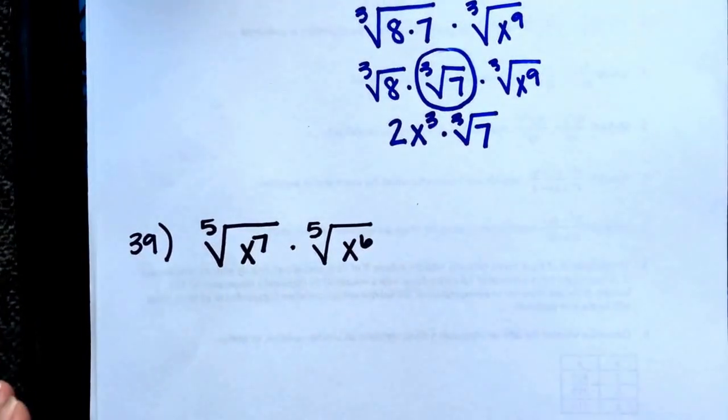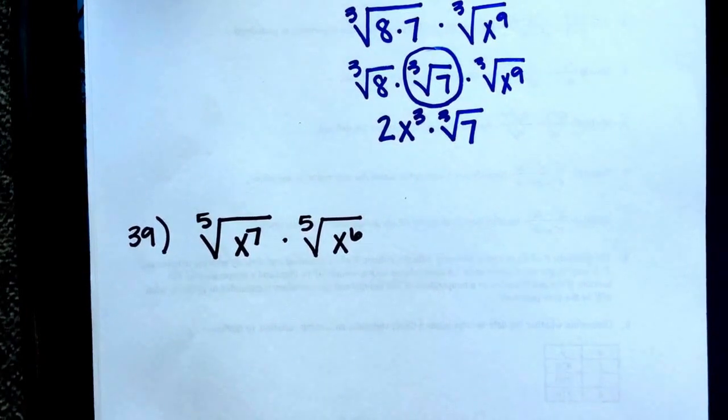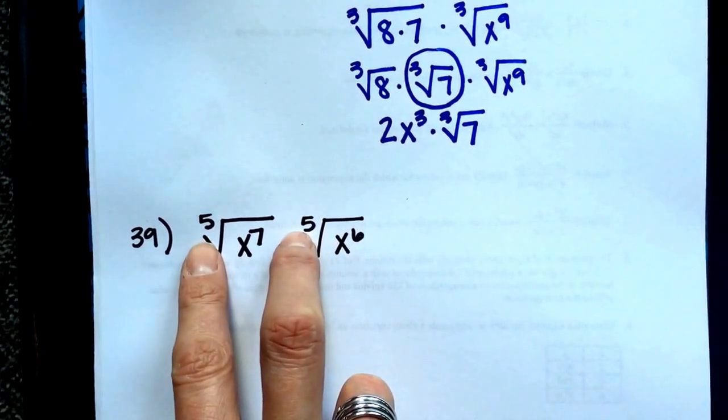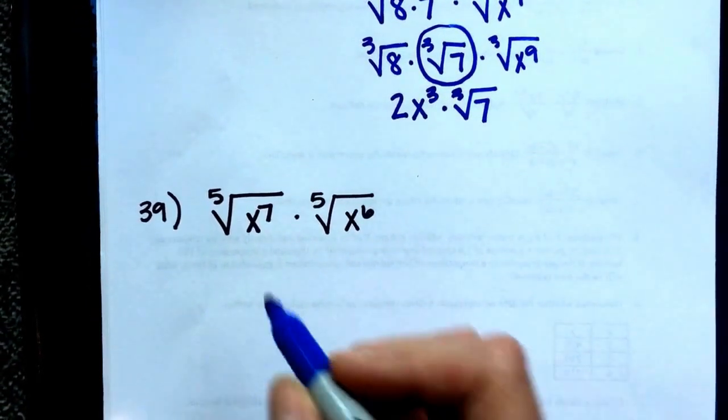Problem 39 also asks us to simplify. I could simplify each one of these separately and then combine them, but then I would have to check to see if I could simplify it again. Since they have the same base and same root, I'm going to combine them into a single radical first.